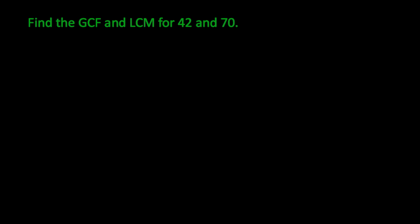We begin with the question of find the greatest common factor and lowest common multiple for 42 and 70. And the interesting thing about this technique is it finds both simultaneously for us.